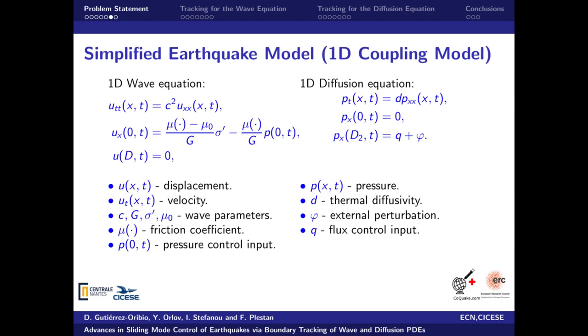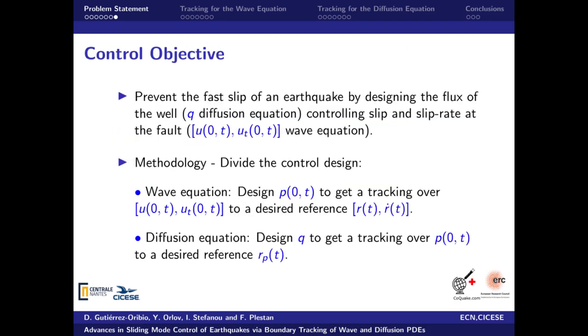For the case of the diffusion equation, the state p is the pressure and it has only Neumann boundary conditions. At x equal to 0, the flux is 0, and at x equal to d2, the flux control input q and the external perturbation bar phi are located. The control objective in our work is to prevent the fast slip of an earthquake-like behavior by designing the control input q of the diffusion equation to perform a tracking over the displacement and velocity at the fault of the wave equation. The control design will be divided for this purpose, where the control input p0 will be designed to perform a tracking over the wave equation.